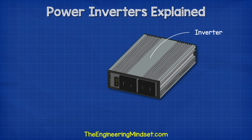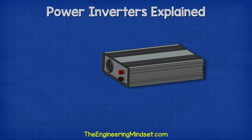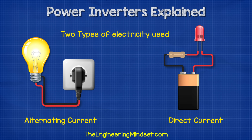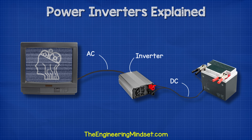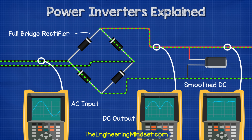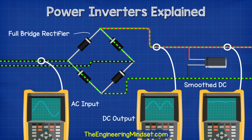A typical inverter looks something like this. It has some red and black DC terminals on the back end, and on the front end we find some AC electrical outlets. That's because there are two types of electricity: AC and DC. An inverter is used to convert DC, or direct current, into AC, alternating current. We can also convert AC into DC with the use of a rectifier, but we'll cover that in a separate video.